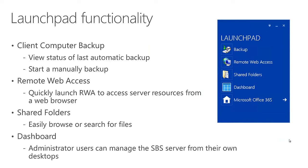The Launchpad has four main areas. One is to look at the status of the client computer backup. When you connect your computer into the Essentials environment, by default it will automatically back up that computer to the server overnight or during whatever window of time you've defined. You can also use the Launchpad to start a manual backup - handy for folks who come in and out of the office, who can connect to the network, start a manual backup, go to a meeting, and return to find the backup completed.